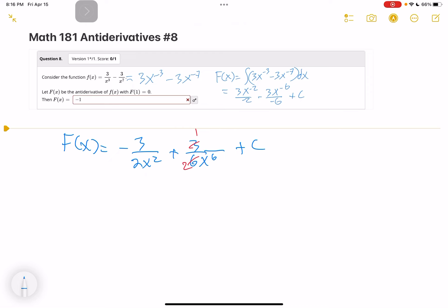And our initial value condition says F(1) equals 0. So F(1) is negative 3 over 2 times 1 squared plus 1 over 2 times 1 to the 6 plus C equals 0.